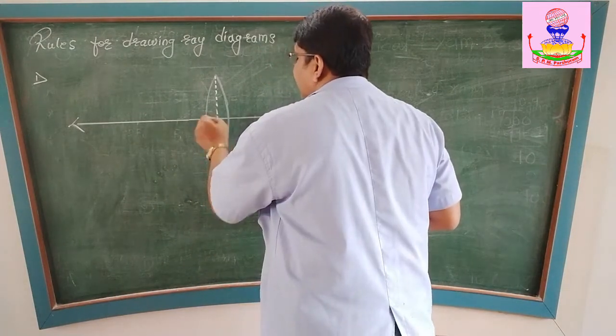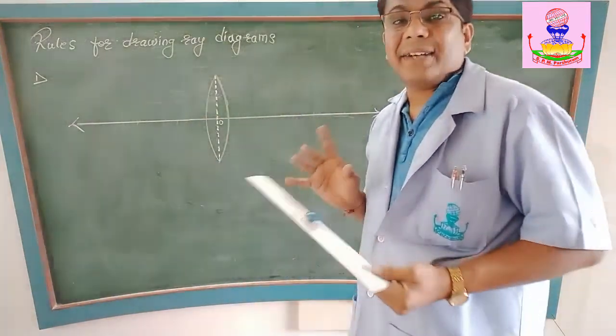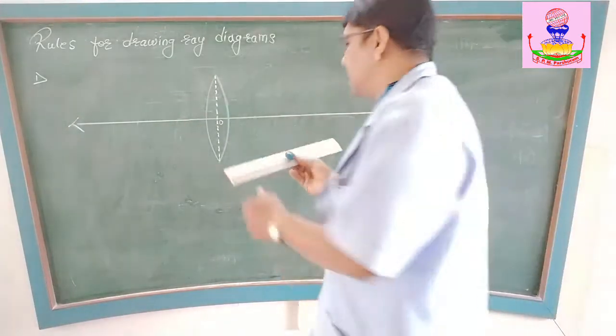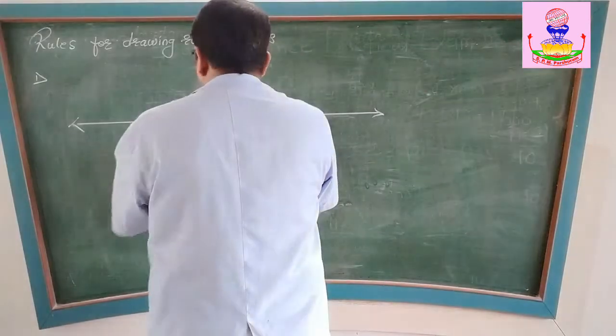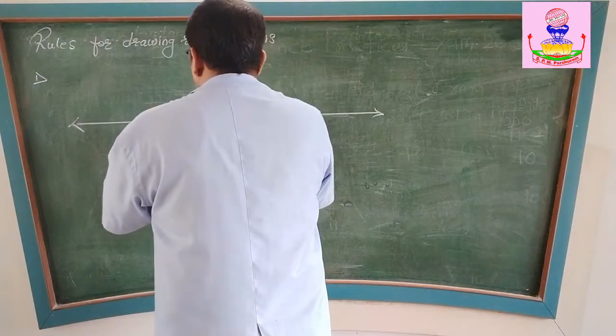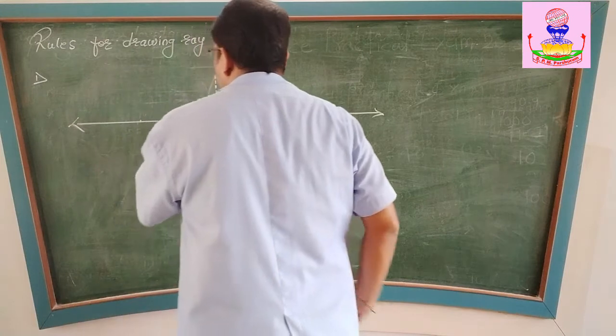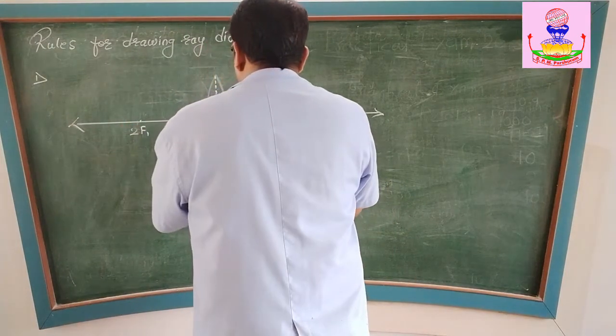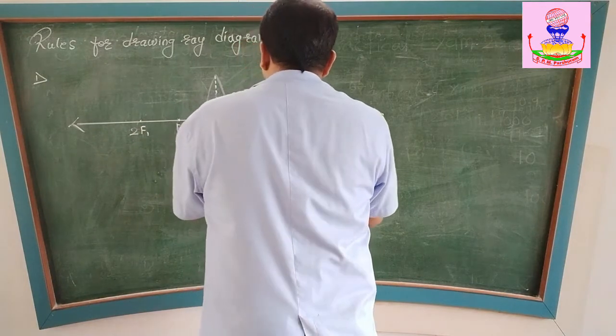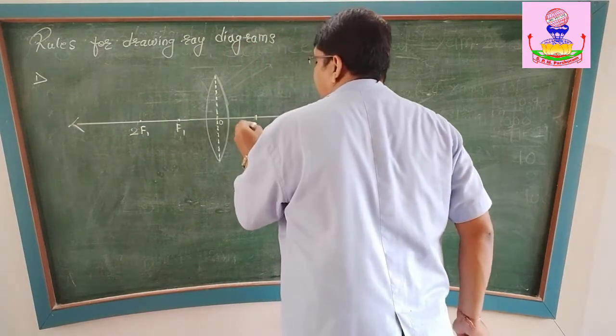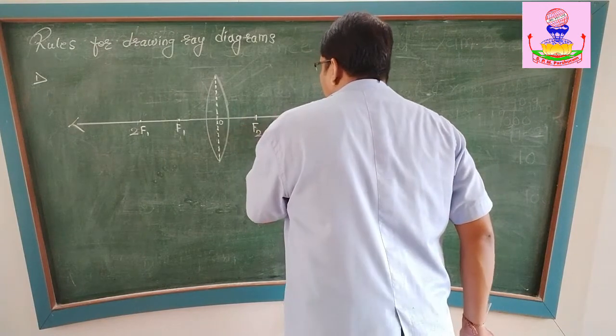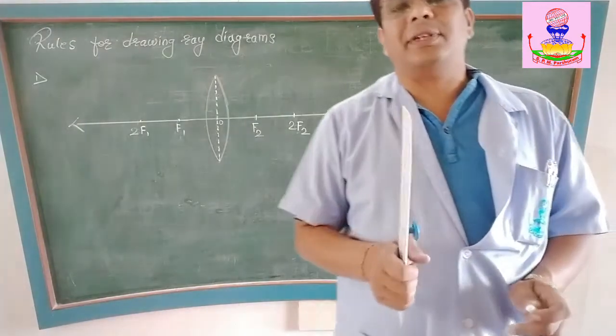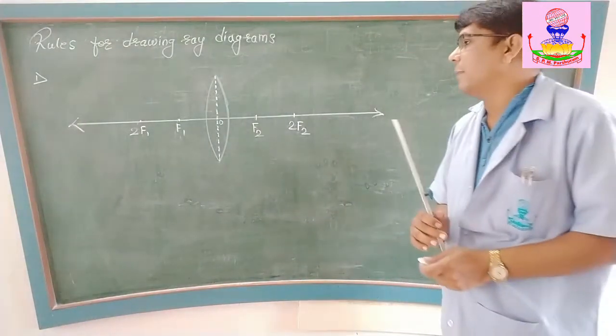This is the optical center. Now as I have said, same distance on both sides. I am taking 5 centimeters each. So this is my F1, this is my 2F1. And here 5, 5. And here 5, 5. If you are exact in this marking, you will never make mistakes with the ray diagrams.